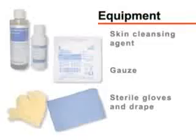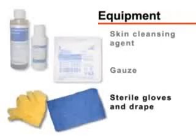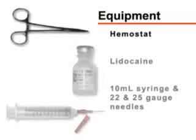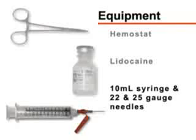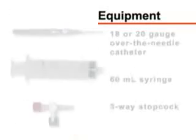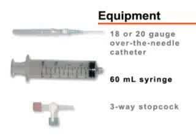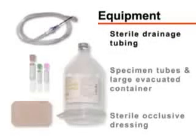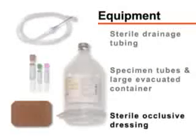For sterile preparation of the site and administration of anesthesia, you will need a skin cleansing agent, sterile gauze, sterile gloves, a sterile drape, a hemostat (optional), one or two percent lidocaine, and a 10 milliliter syringe with a 22 to 25 gauge needle. For the collection of pleural fluid, you will need an 18 to 20 gauge over-the-needle catheter, a 60 milliliter syringe, and a three-way stopcock. You will also need sterile drainage tubing, specimen tubes and a large evacuated container, and a sterile occlusive dressing.